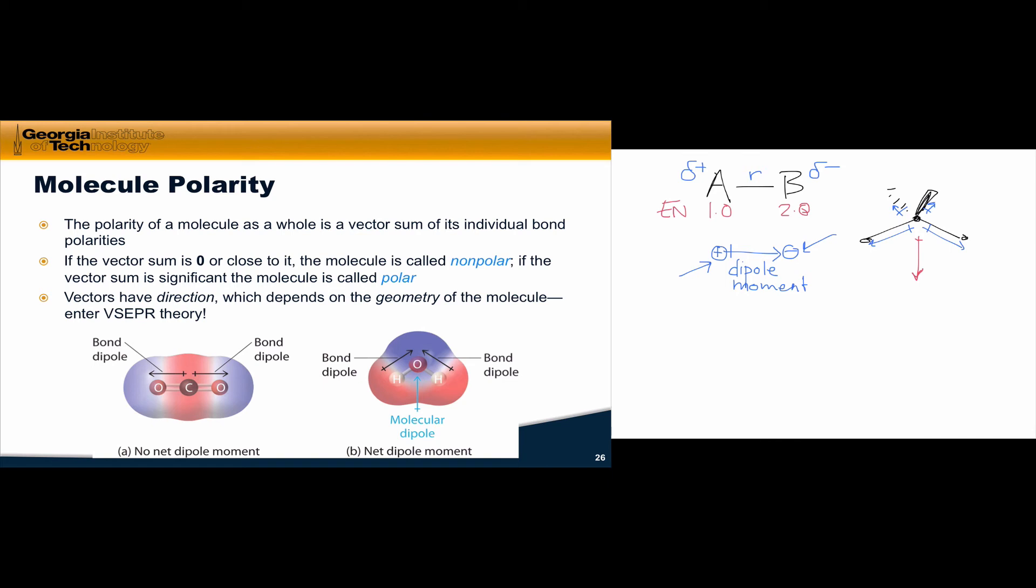So shift your attention now to water on the right. Water has a bent structure, and as we'd expect, its two OH bond dipoles point upwards toward the more electronegative oxygen atom. When we add up these two vectors, while it is true that the horizontal, or the X components, cancel one another out, the vertical Y components actually reinforce one another, so that the overall molecular dipole is an upward-pointing vector, which you see in light blue on the slide.